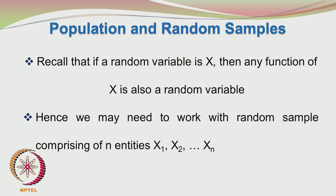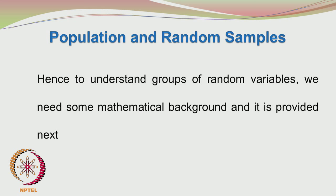The sample mean is a random variable and the sample variance is also a random variable. Let us say we have taken n entities from the population, denoted by x₁, x₂, and so on to xₙ. These are all random variables and they are independent. To make further progress with random variables and random samples, we need a bit of mathematical background which will be provided in the next few slides.